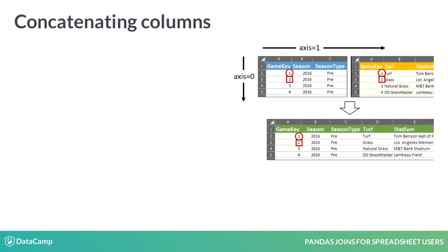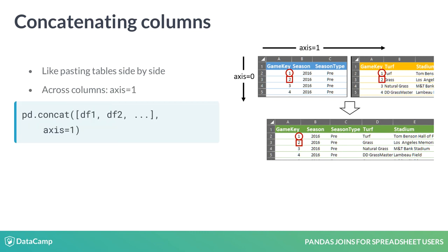You can also use concat when combining complementary data. Here you'll want to concatenate across columns, which is like pasting tables side-by-side. You'll need to tell Pandas to join by column. Pandas refers to moving down rows as axis equals 0 and across columns as axis equals 1. By specifying axis equals 1 in the concat statement, we override the default behavior and join the columns.